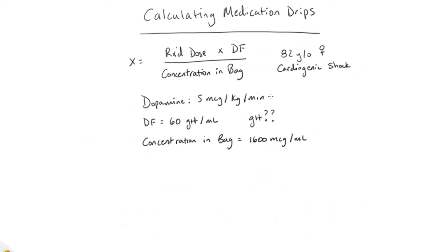The concentration in the bag of dopamine, regardless of the size of your bag, whether it's a liter, 500 mils, or 250, it's always a concentration of 1,600 micrograms per mil. So if we take our weight and multiply it by our 5 mic dose, we get a total of 400 micrograms per minute.